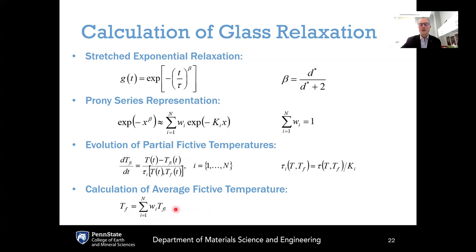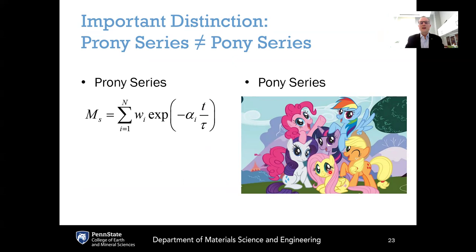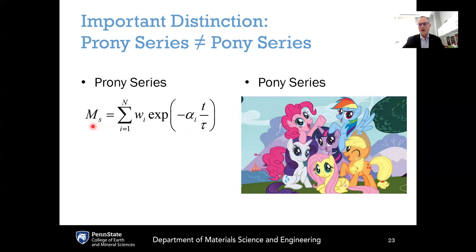The average fictive temperature Tf is the weighted average of all partial fictive temperatures, with weighting factors w_i from the Prony series. The only input needed is the average relaxation time tau as a function of T and Tf, given by the MAP equation for non-equilibrium viscosity covered in a previous lecture. Note: do not confuse a Prony series — a mathematical summation of simple exponential decays — with a pony series, which features pastel-colored ponies.